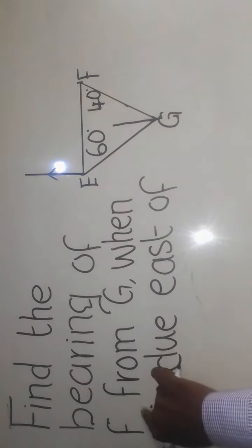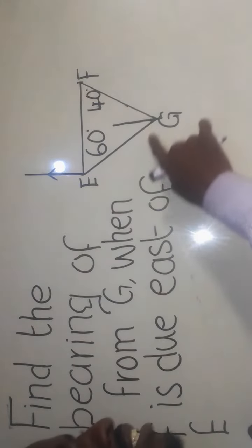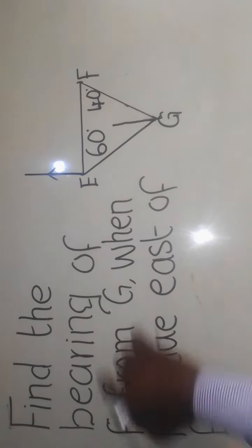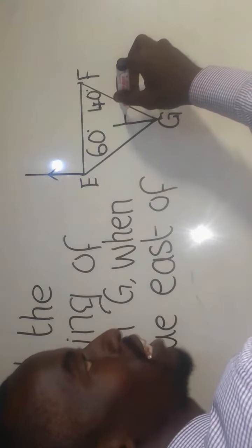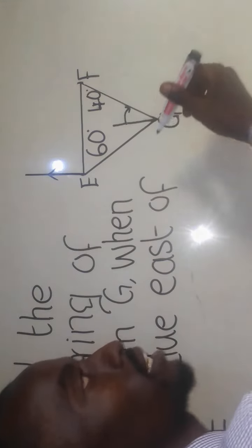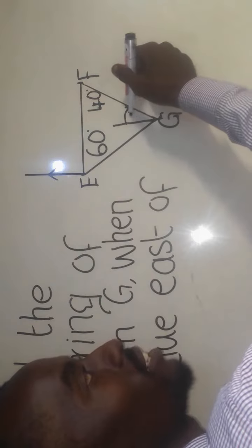Now see the bearing of F from G, you go to where G is and then we turn from the north until where it meets with the line for F. So here we turn to where it meets with the line for F which is here. In simple terms, they want us to find this angle which is here.